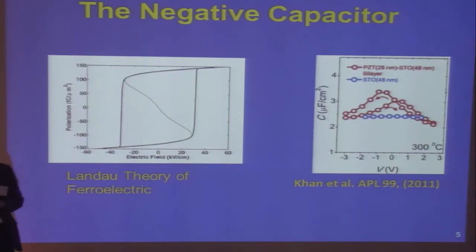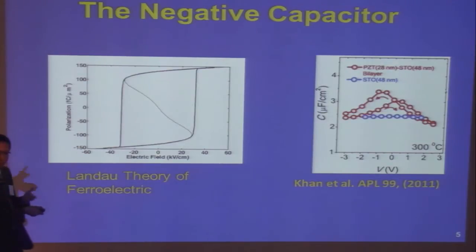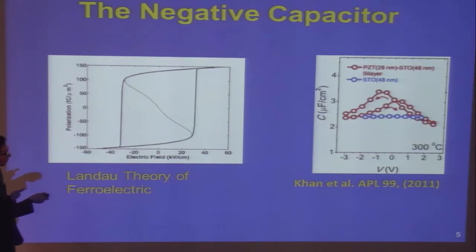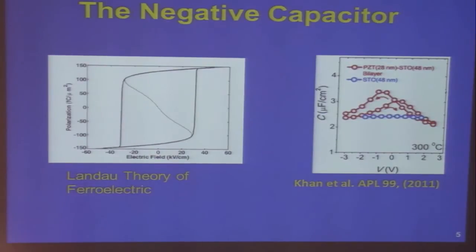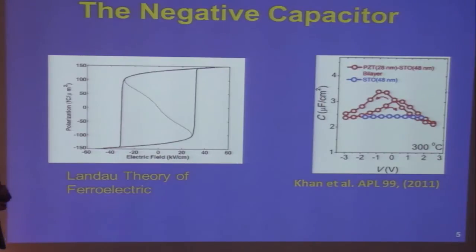In 2011, Professor Salahuddin's student Asif Khan provided some experimental evidence. He measured two capacitors: one just a dielectric, and the other a dielectric in series with a ferroelectric. He measured the series combination's capacitance and found it was actually larger than the dielectric capacitance alone, which is unusual — if both capacitors are positive, the series combination should be smaller. But he measured larger capacitance, which is some indication of the existence of negative capacitance.